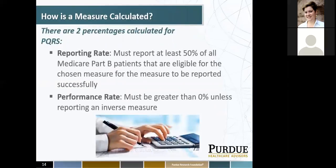How is a measure calculated? There are two percentages calculated for PQRS: reporting rate and performance rate. Your reporting rate — you must report at least 50% of all Medicare Part B patients that are eligible for the chosen measure for it to be reported successfully. Performance rate must be greater than 0%, unless reporting an inverse measure. An inverse measure is one where a lower value indicates better quality, so it's acceptable to have a 0 performance rate. For example, with diabetes, you would like to have a lower rate, which indicates better performance.